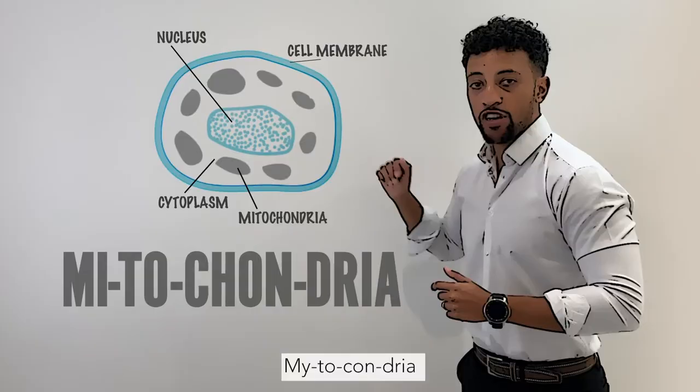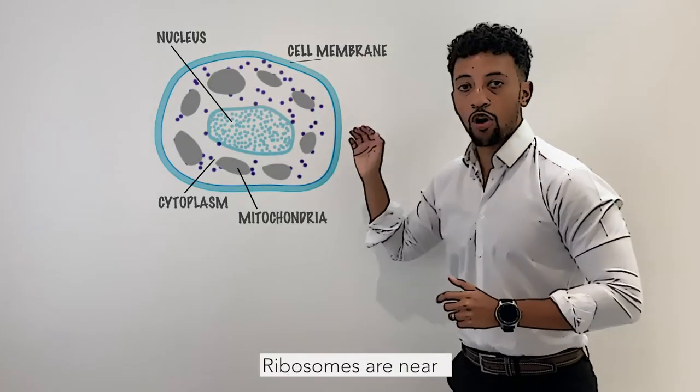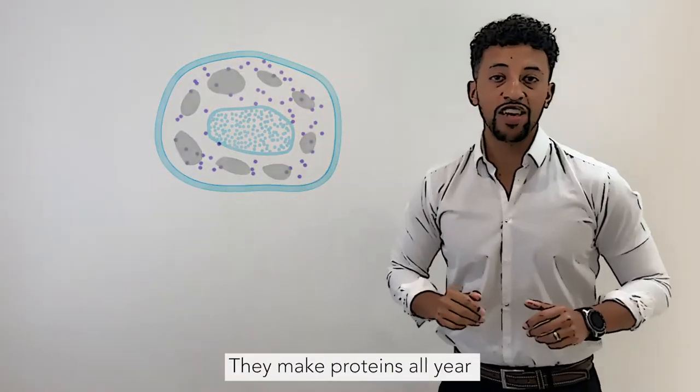Now, mitochondria. Energy release happens here. Ribosomes are near, they make proteins all year. Animals done.